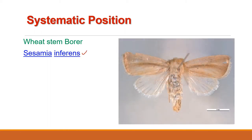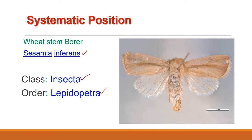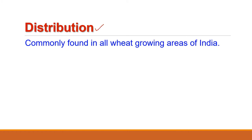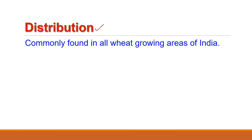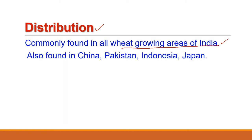This insect belongs to class Insecta, order Lepidoptera and family Noctuidae, genus Sesamia and species inferens. Regarding geographical distribution, wheat Stemborer or the pink Stemborer is found in all wheat growing areas of India. It is also found in China, Pakistan, Japan, Indonesia, Philippines and adjoining islands.